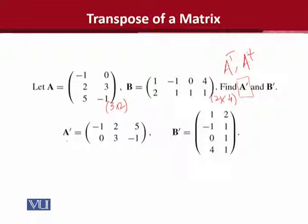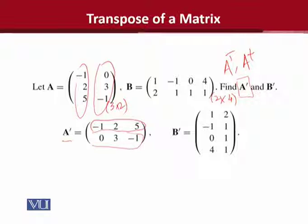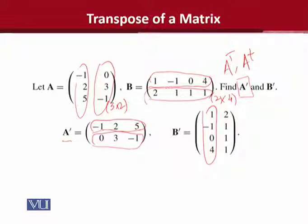You can see that here we have a bar, and the first column has become a row, and in this case the second column has become a row. Once we do that, we can call it the transpose of the matrix.